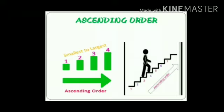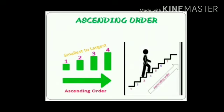In the second picture you can see that a man is climbing the stairs. The numbers written are 1, 2, 3, 4, 5, 6, and 7. Here we are going up, meaning from small to big. Ascending order means to go up, starting from small numbers to big numbers.